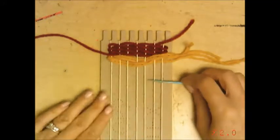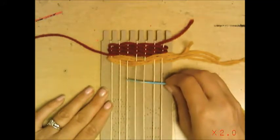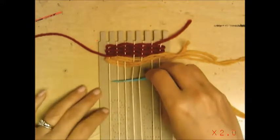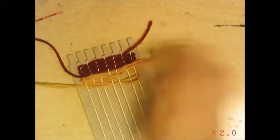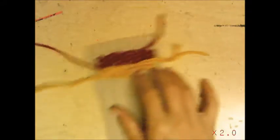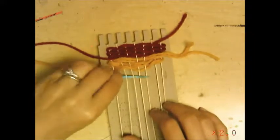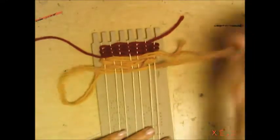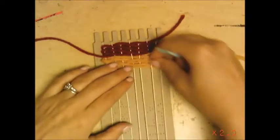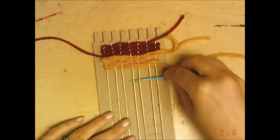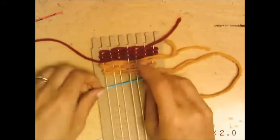I ended under two so I'm going to go over two, under two, under two, over two. I'm just going to go under the one. Over one, under two, over two, under two, over two, under two, over two, under one.